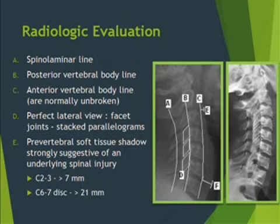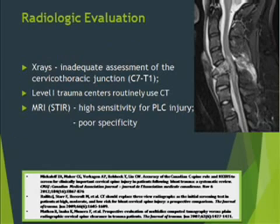When looking at the X-ray, one should focus on the spinal laminar line, the posterior vertebral body, and the anterior vertebral body lines, which are normally unbroken. In a perfect lateral view, the facet joints normally appear like stacked parallelograms. The pre-vertebral soft tissue shadow, if more than 7 mm at C2-3 or more than 21 mm at the C6-7 disc level, is strongly suggestive of a cervical spine injury.